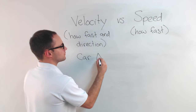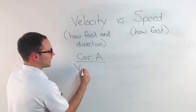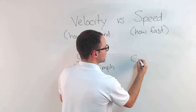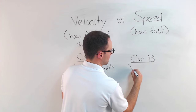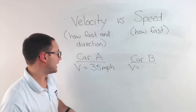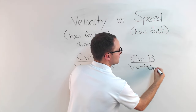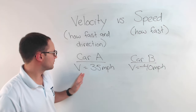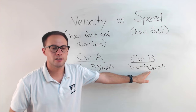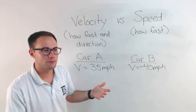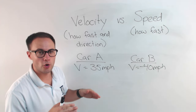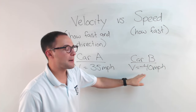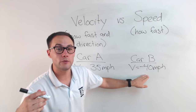Car A had a velocity of 35 miles per hour. Car B had a velocity of negative 40 miles per hour. This one's positive and this one is negative. Basically, this car is going forward, which is why it's positive. This one's negative — it's the opposite, which means it would be going backwards or in reverse.